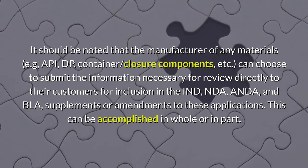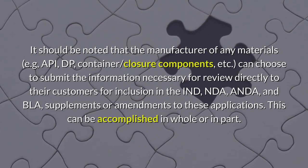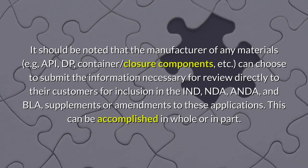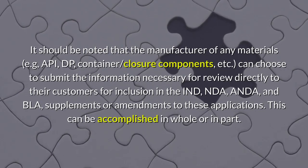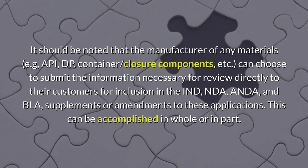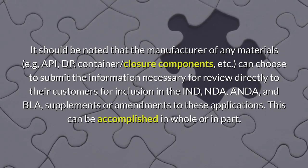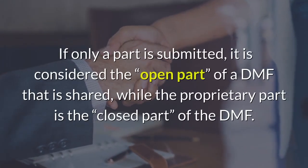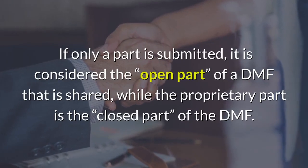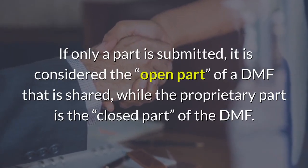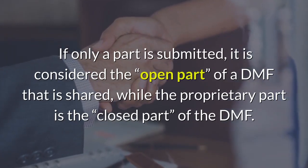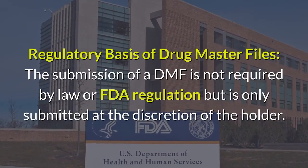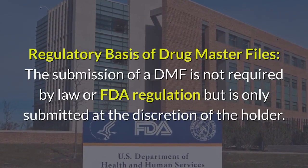It should be noted that the manufacturer of any materials — such as APIs, drug products, container closures, components, etc. — can choose to submit the information necessary for review directly to their customers for inclusion in an IND, NDA, ANDA, or supplements and amendments to these applications. This can be accomplished in whole or in part; if only a part is submitted, it is considered the open part of a DMF that is shared, while the proprietary part is the closed part of the DMF.